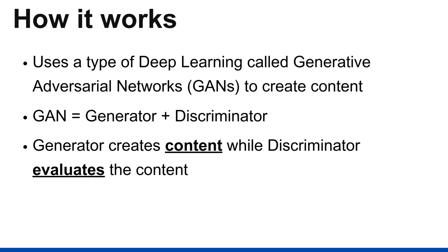Over time they act like adversaries — the generator tries to create data that tricks the discriminator, and the discriminator tries to accurately classify it. Over time the generator learns to create increasingly realistic content that can fool the discriminator, while the discriminator gets better at distinguishing real from generated content. This is the underlying technology behind deepfakes and similar content. GANs have enormous potential, and this is essentially how generative AI works.